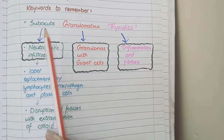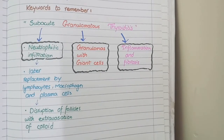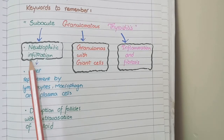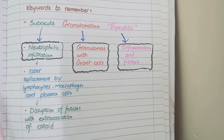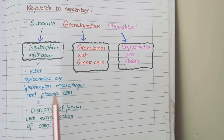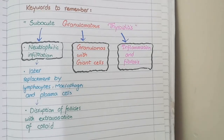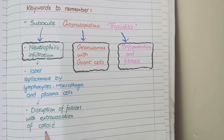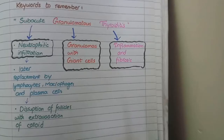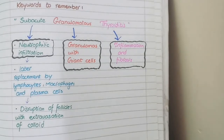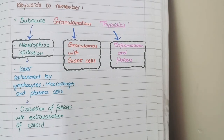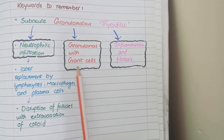The first keyword is 'subacute,' meaning between acute and chronic. On microscopy, you initially see infiltration of acute inflammatory cells — neutrophils — which are gradually replaced by chronic inflammatory cells: lymphocytes, macrophages, and plasma cells. These inflammatory cells cause disruption of follicles, resulting in extravasation of colloid material. The second keyword is 'granulomatous' — when colloid is extravasated, macrophages ingest it, and being unable to fully digest it, this elicits a granulomatous inflammation with formation of giant cells.